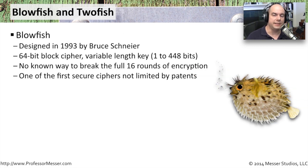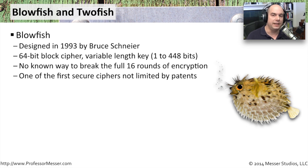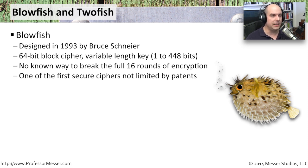Two rather significant symmetric key ciphers are Blowfish and Twofish. Blowfish was created in 1993 by Bruce Schneier, a very well-renowned security expert. It's a 64-bit block cipher with a variable length key from one bit up to 448 bits. Nobody has really been able to break all 16 rounds of this encryption, and it's still being used today. What's also interesting is there are no patents associated with Blowfish or Twofish — it was specifically created to be in the public domain, meaning anybody can take advantage of it.